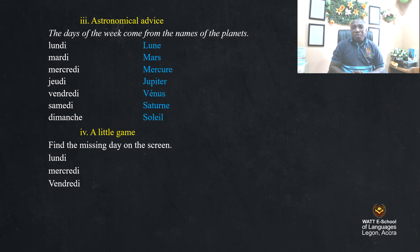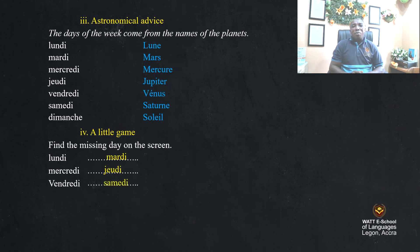When you look at lundi and mercredi, what is the missing day before mercredi? It's mardi. Now mercredi and vendredi — what is the missing day? It's jeudi. And after vendredi, what is the missing day? Samedi! You should know the days in order to be able to do this.